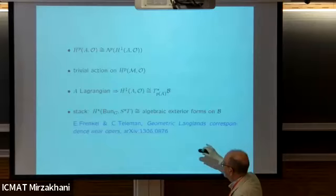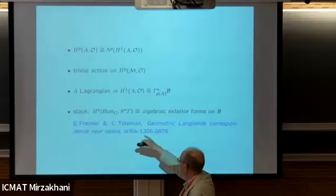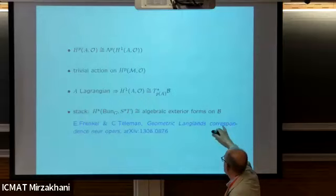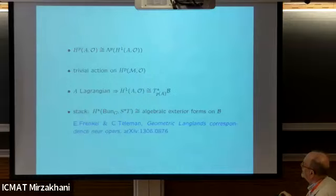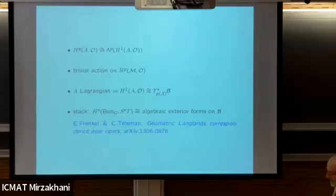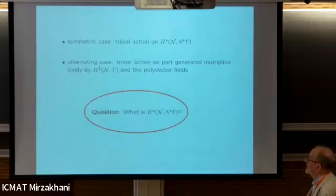Using the stack, you can forget about the codimension argument. What Frenkel and Teleman prove is that actually the cohomology on the stack of these symmetric things can be understood by this direct image in terms of the algebraic exterior forms on the base B. The upshot is that at least on the stack level, there's a completely trivial action - these vector fields act trivially by bracket operation on this symmetric cohomology. So the question is: given what we know about the symmetric version, what do we know about the odd integrable system?